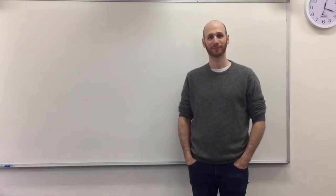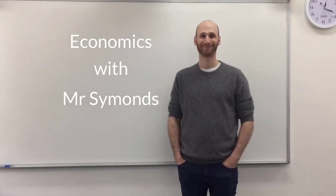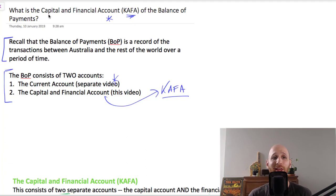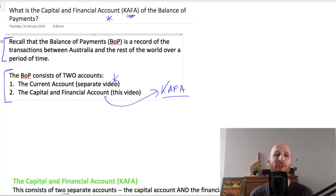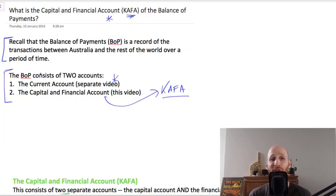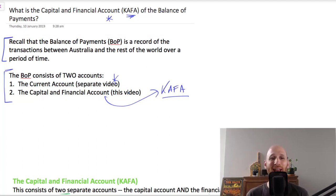Let's have a look at the capital and financial account of the balance of payments. The balance of payments is a record of transactions between Australia and the rest of the world over a period of time — it records those trade and financial flows. Remember, the balance of payments consists of two accounts: the current account, which we've looked at in a separate video, and the capital and financial account.